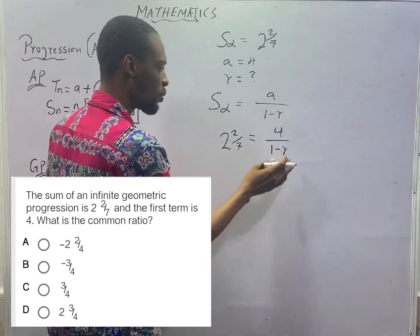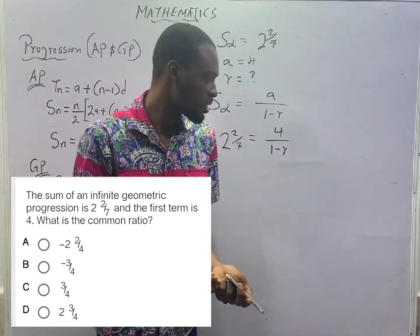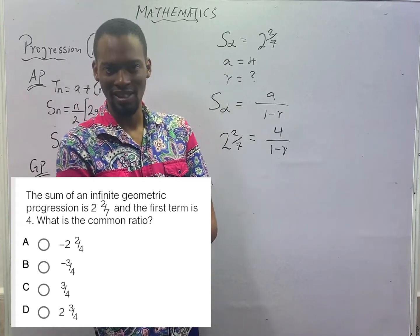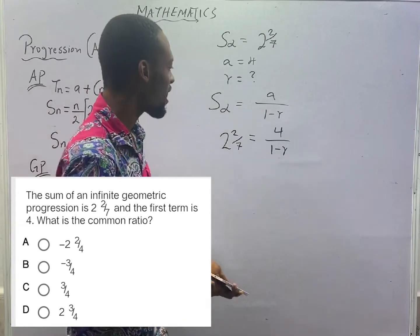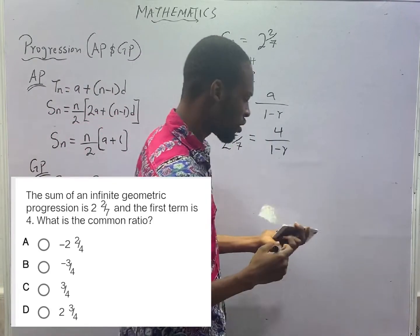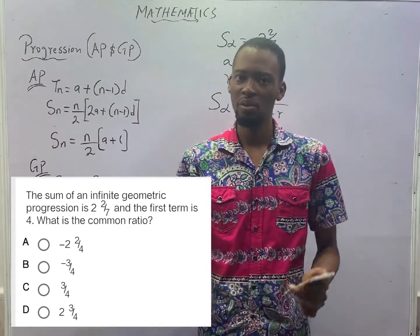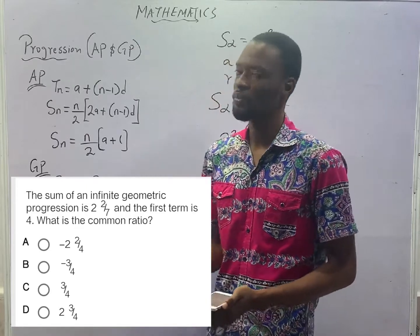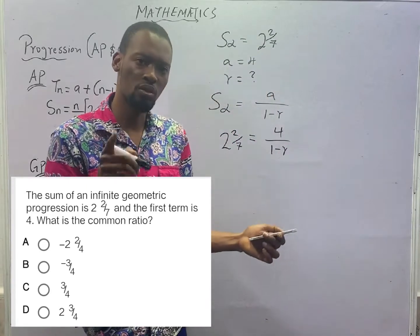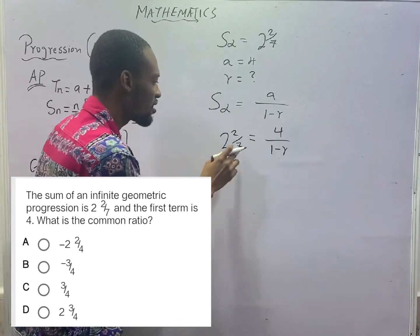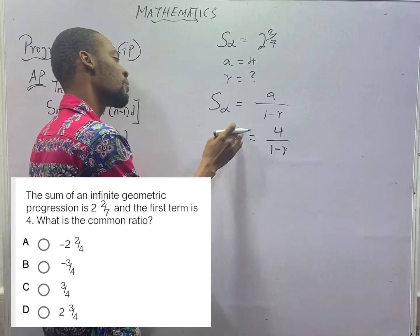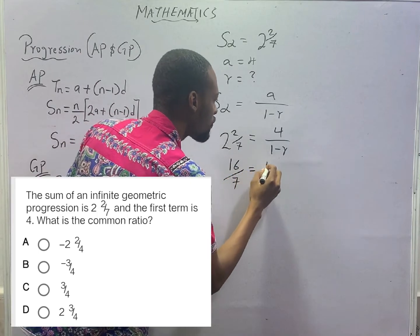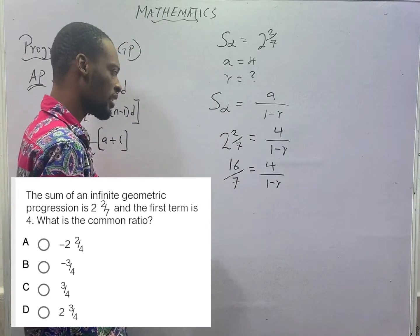What you are interested in is R. To get R, you simply make R the subject of formula, which we treated in change of subject formula. From here, this is a mixed fraction. You must change all mixed fractions to improper fraction. 7 times 2 is 14 plus 2 is 16. So 16/7 equals 4/(1-R).